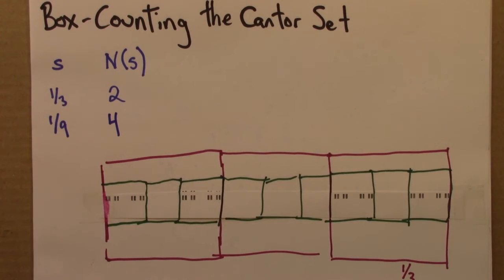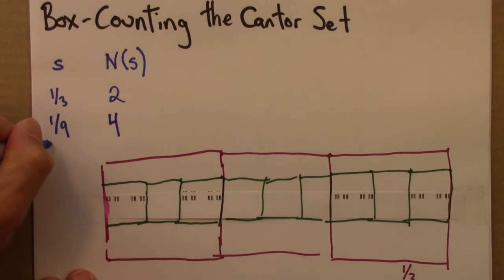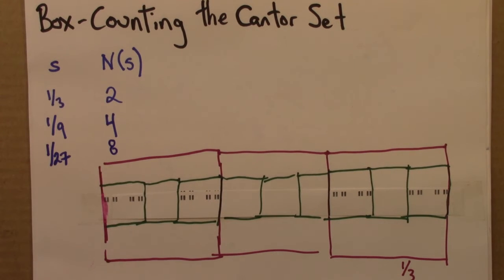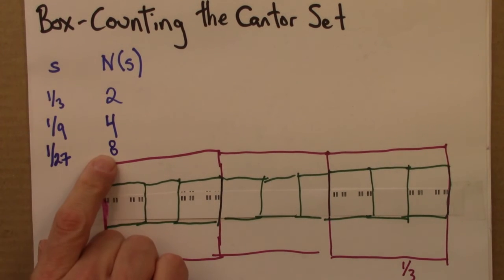So, four, and a similar argument, I won't draw it out because it will get too messy. A twenty-seventh, I do a third of a third, you can see there's going to be... Sorry, a twenty-seventh, a third of a ninth, that there will be eight needed.